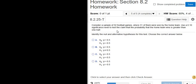Consider a sample of 52 football games where 31 of them were won by the home team. Use a .10 significance level to test the claim that the probability that the home team wins is greater than one-half. So this is a hypothesis test for a proportion.